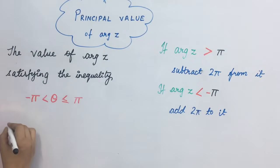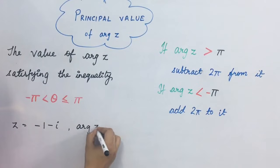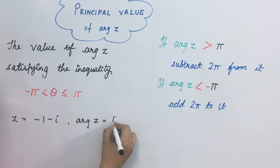We will subtract 2 pi from it. Let us see. In the first case, we have seen z equal to minus 1 minus i. In this, argument's value was how much? That was equal to 5 pi upon 4.